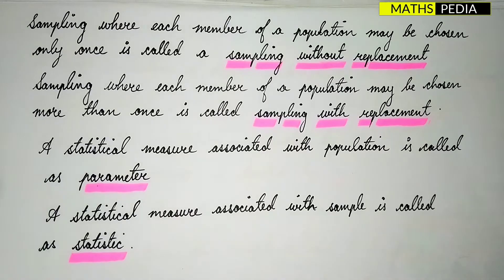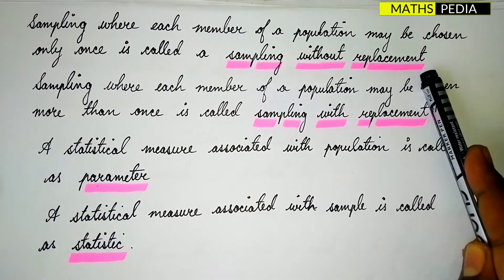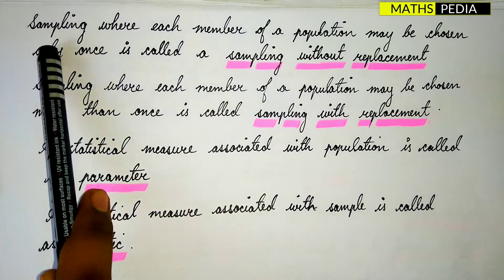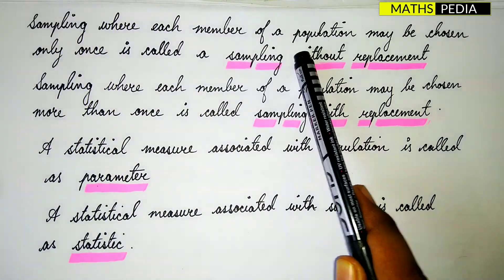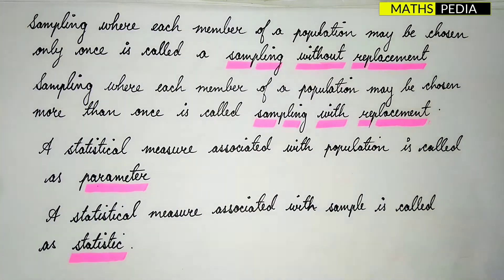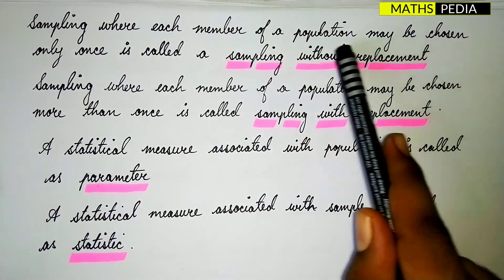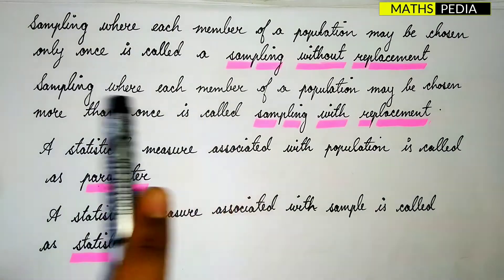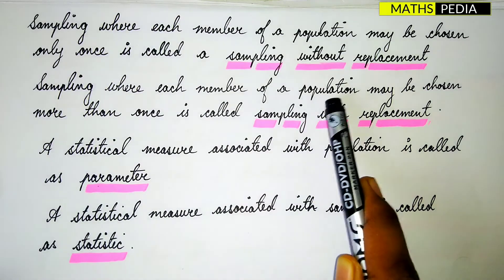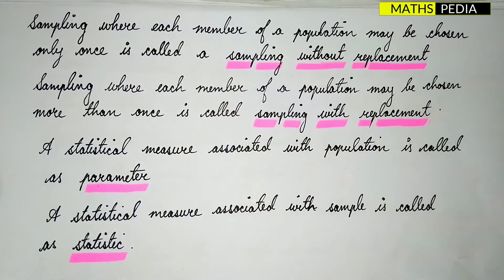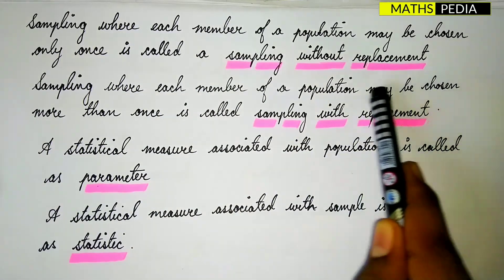We can consider two types of sampling: sampling without replacement and sampling with replacement. Sampling without replacement is where each member of a population may be chosen only once. Sampling with replacement is where each member of a population may be chosen more than once — it can be repeatedly chosen. You have to remember these terms in order to solve problems based on sampling.